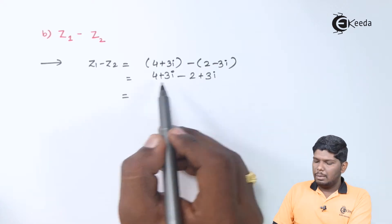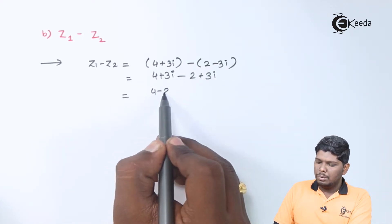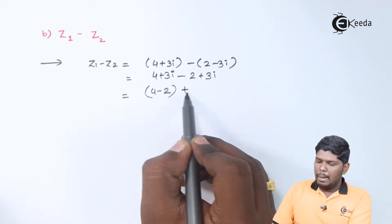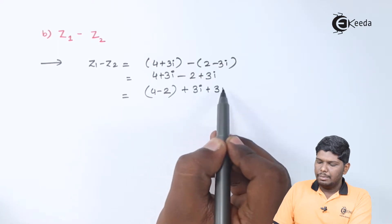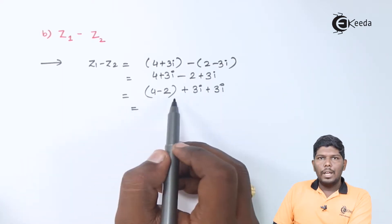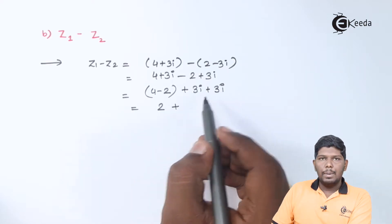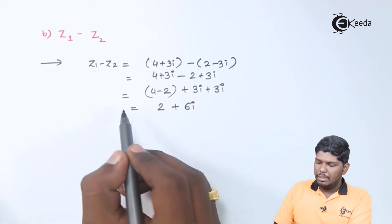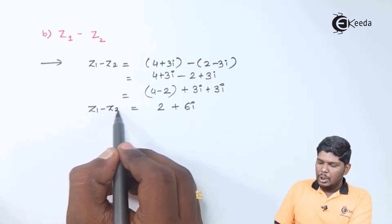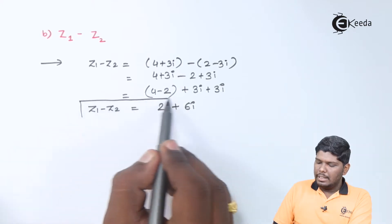Again, we will separate real terms. We have 4 minus 2 followed by plus 3i plus 3i. 4 minus 2 will give you 2 and 3i plus 3i will give you 6i. So, this becomes z1 minus z2.